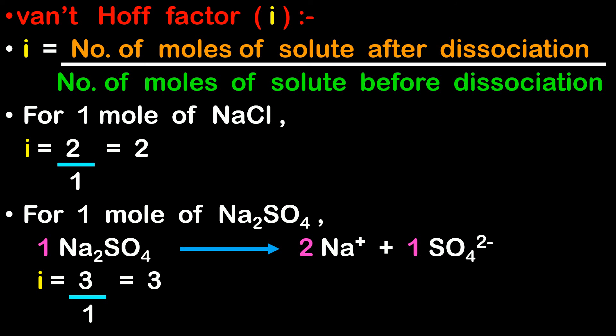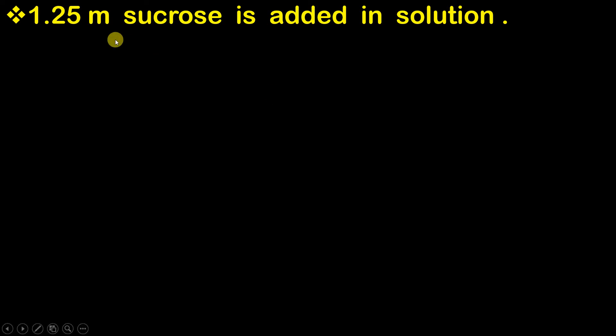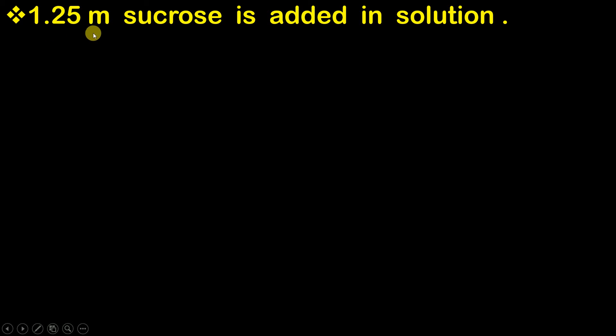Let us understand the use of the Van't Hoff factor with the help of a numerical. In the numerical, it is given that 1.25 molal sucrose is added in solution. Here sucrose is the solute and sucrose is a non-electrolyte solute. This non-electrolyte solute, sucrose, is added in the solution and the concentration of the sucrose is 1.25 molality.